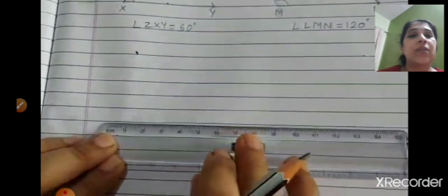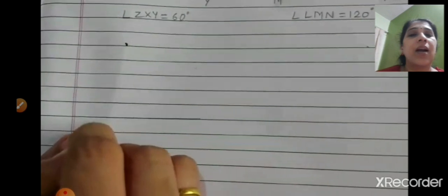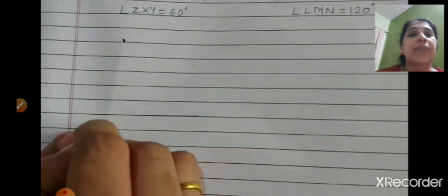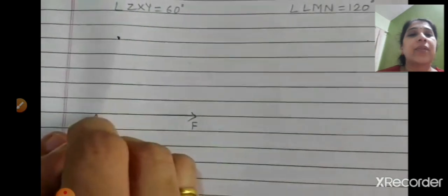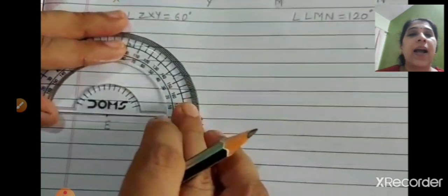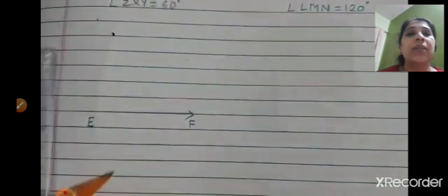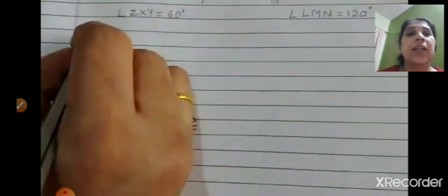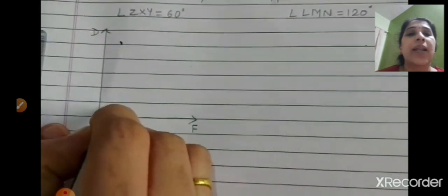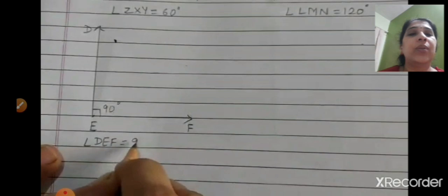Third angle is 90 degrees. Draw a straight line and mark the two points as E and F. Keep the center of the protractor on point E. You can see 90 degrees — it is a straight one. Join the point, label the third letter D, and write 90 degrees near E. So angle DEF = 90 degrees.